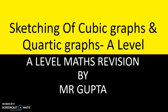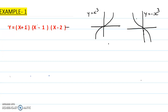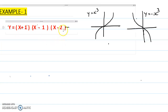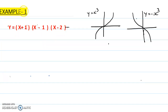Let's start with Example 1. The question is y equals (x+1)(x-1)(x-2), and I have already sketched the cubic graph here. You can see there is a y = x³ graph and a y = -x³ graph — this is the shape of the graph. Let's do our question.